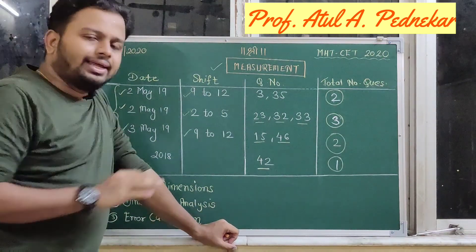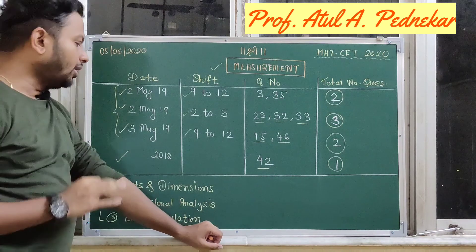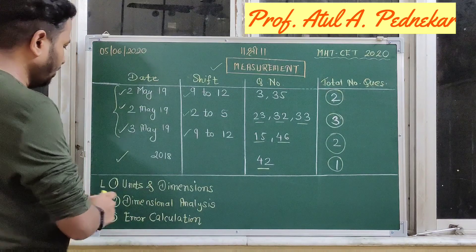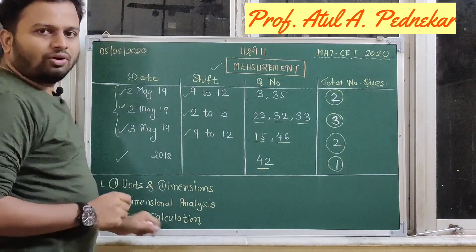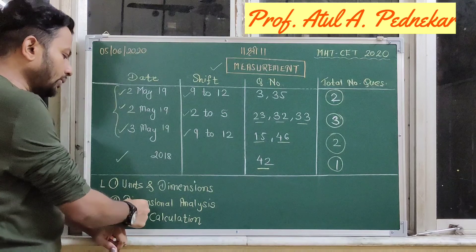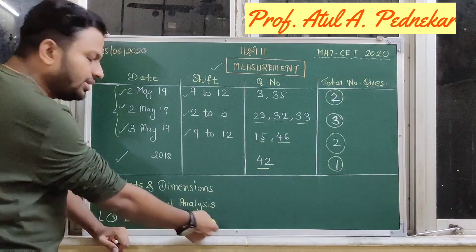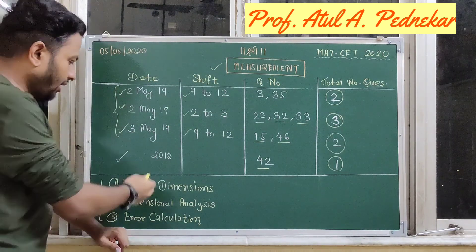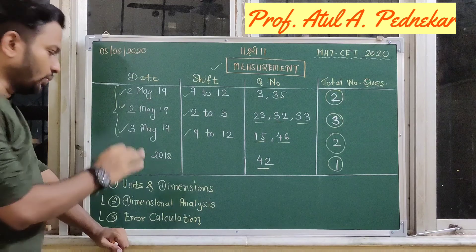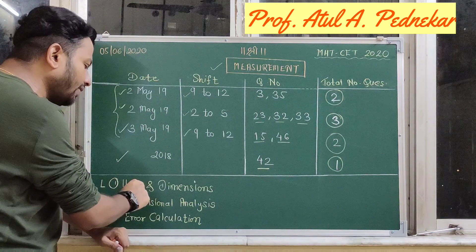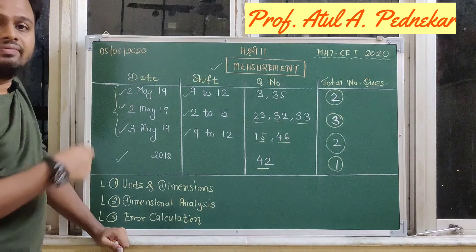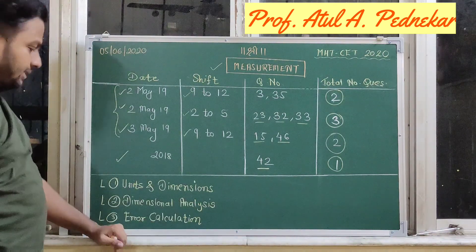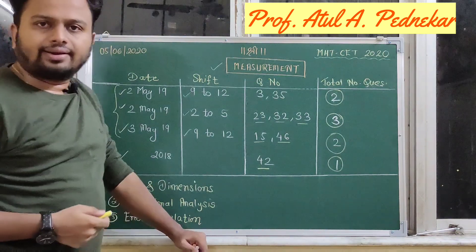So if you analyze all the previous year's questions, you will come to know that we should know three important points from this chapter. Number 1: units and dimensions of different physical quantities. Number 2: dimensional analysis. And number 3: error calculation. So if you want to solve the CET-based questions on measurement, we need to learn these three points. In today's lecture — lecture 1 — I will cover units and dimensions. In lecture 2, we will talk about dimensional analysis, and in lecture 3, we will solve problems based on error calculations.